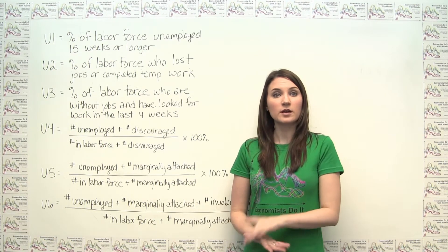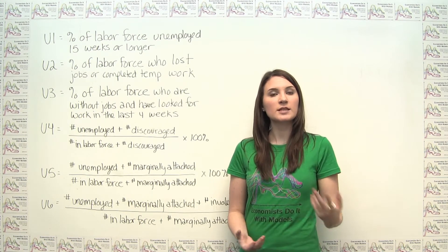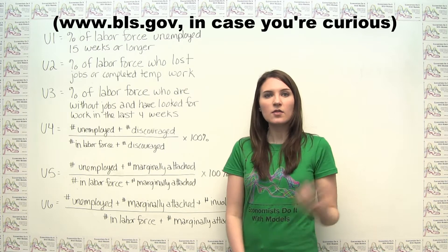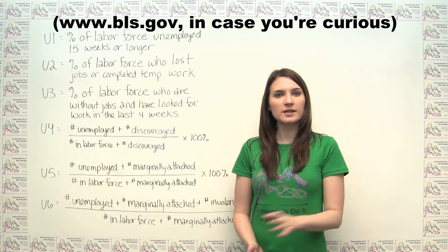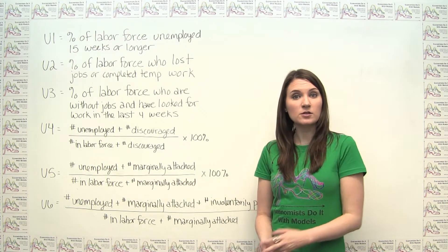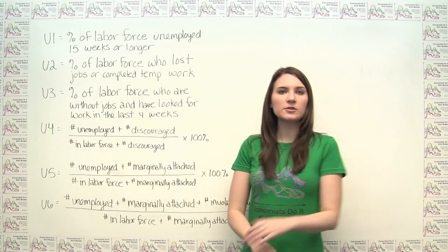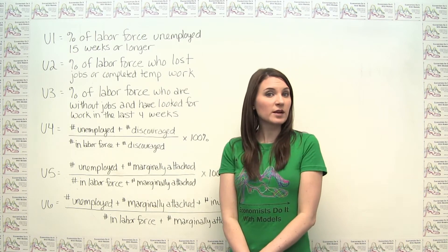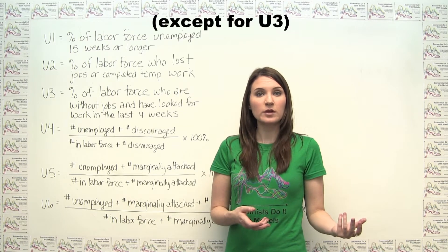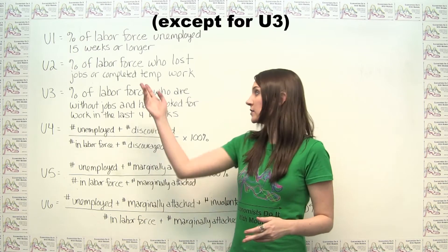Most data regarding unemployment in the United States is collected and reported by the Bureau of Labor Statistics. The BLS divides unemployment into six categories, known as U1 through U6, but these categories don't line up directly with the way that economists categorize unemployment. U1 through U6 are defined as follows.